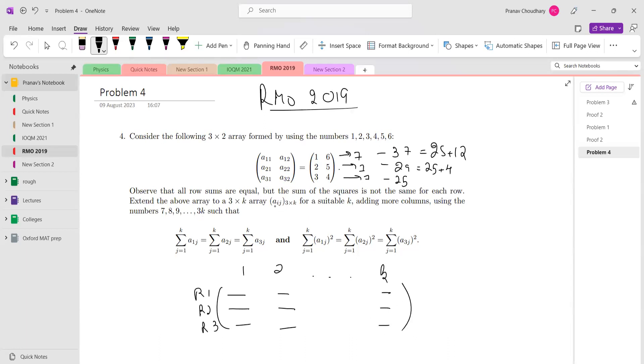Row 1, row 2, row 3, but there are k columns—1, 2, until k columns. It says extend, so the first six elements should be the same as this array: 1, 2, 3, 4, 5, 6. Then add more columns using the numbers 7, 8, 9, until 3k, such that the row sums S1, S2, S3 are equal, and the sums of squares are also equal.